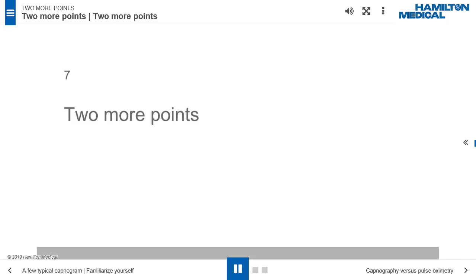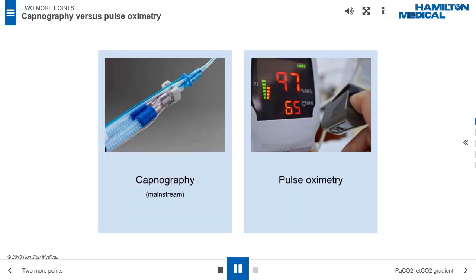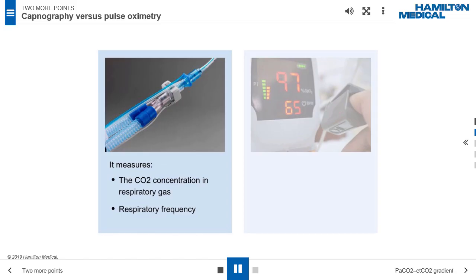Two more points. Capnography versus pulse oximetry. Both capnography and pulse oximetry are common techniques for continuous non-invasive patient monitoring in a similar clinical environment. What are the differences between the two? Can they replace one another?